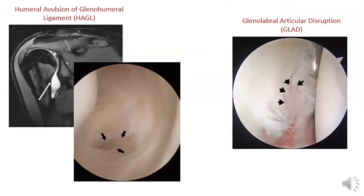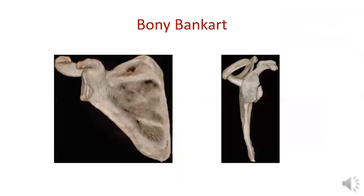HAGL lesion is the humeral avulsion of the glenohumeral ligament and requires open repair. Glenolabral articular disruption is a shearing injury of the articular glenoid cartilage. Bony Bankart is a fracture of the antero-inferior glenoid from the humeral head during anterior shoulder dislocation, and its presence allows the humeral head to easily subluxate anteriorly.